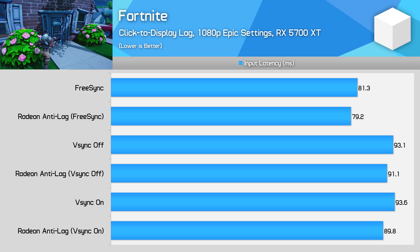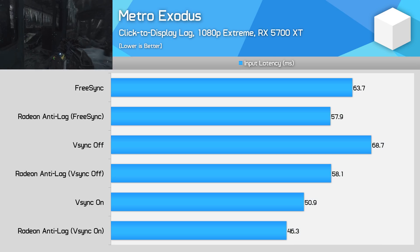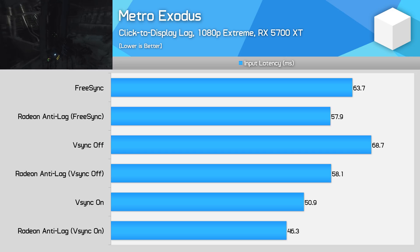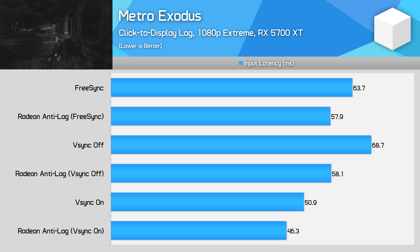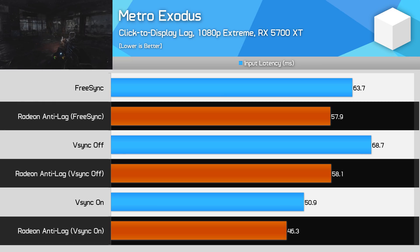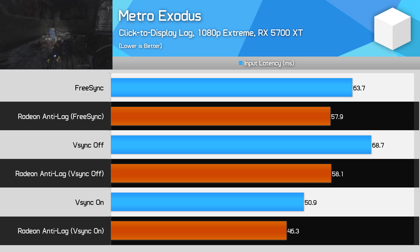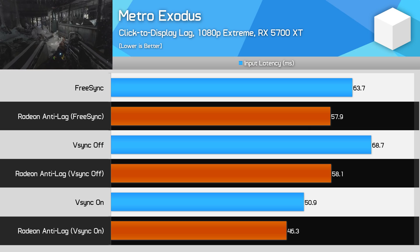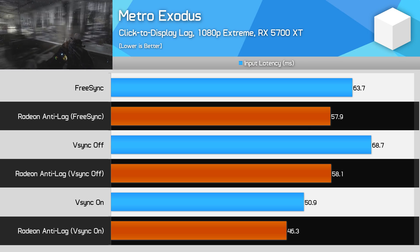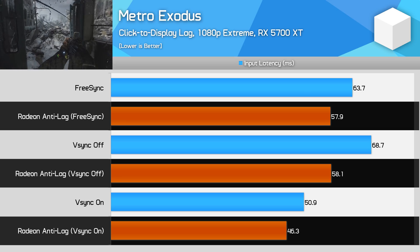I did want to test a game I knew would hit AMD's sweet spot zone, and that's Metro Exodus. I set the game to the extreme preset and was hitting around 75 FPS in our test area. And as expected, the advantages to Radeon Anti-Lag were more obvious here. I saw a reduction in input lag of between 4.6 and 10.6 milliseconds depending on the sync method used, with that latter number showing we're getting near a full frame reduction in Metro Exodus. At these frame rates, achieving 18% better performance or a 15% reduction in input lag is a strong result compared to what we've seen.